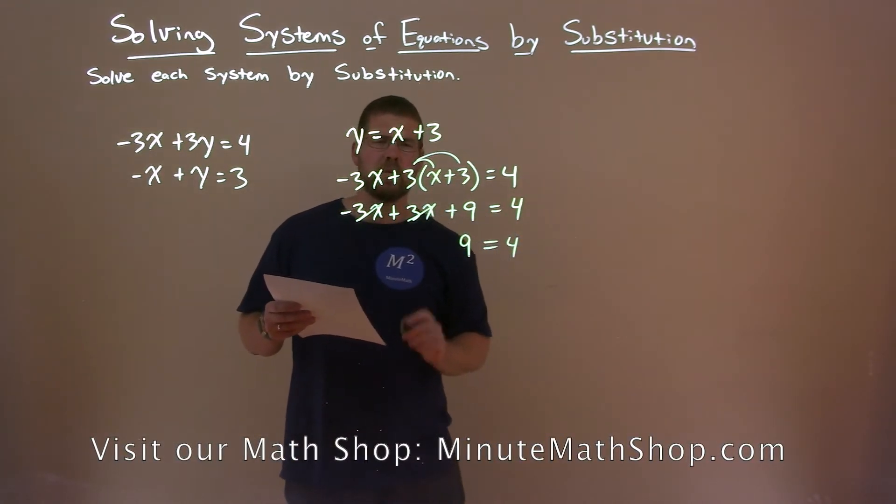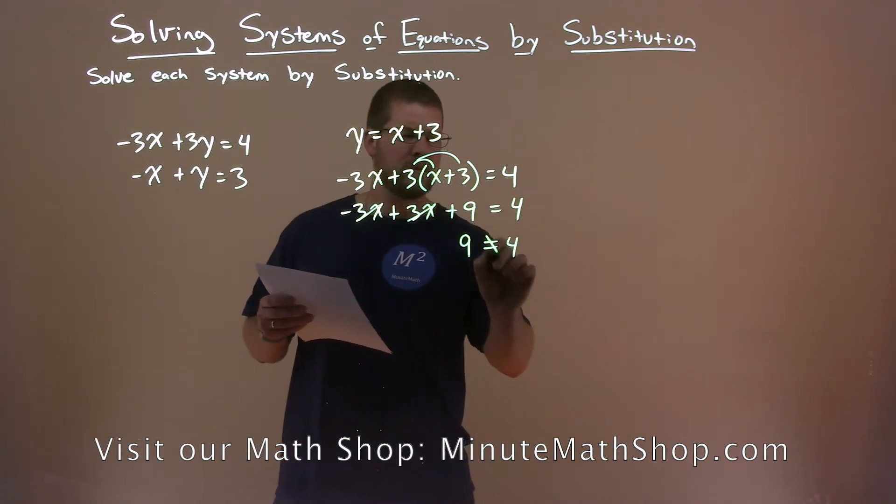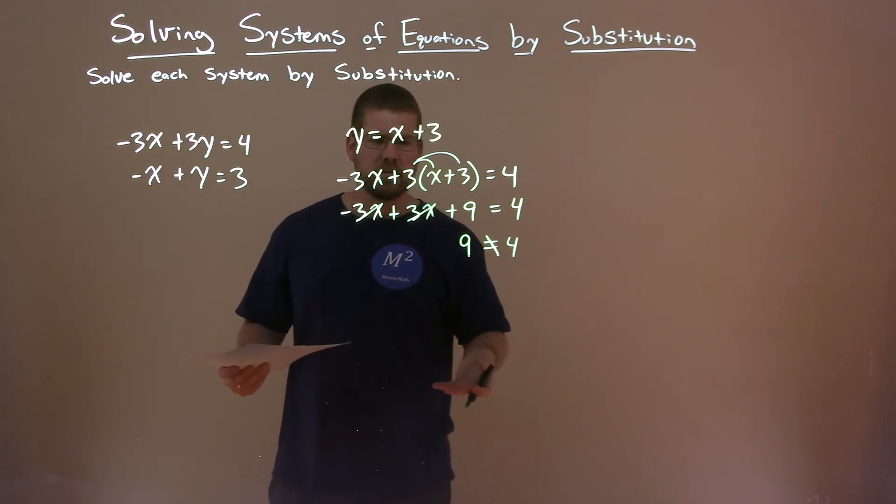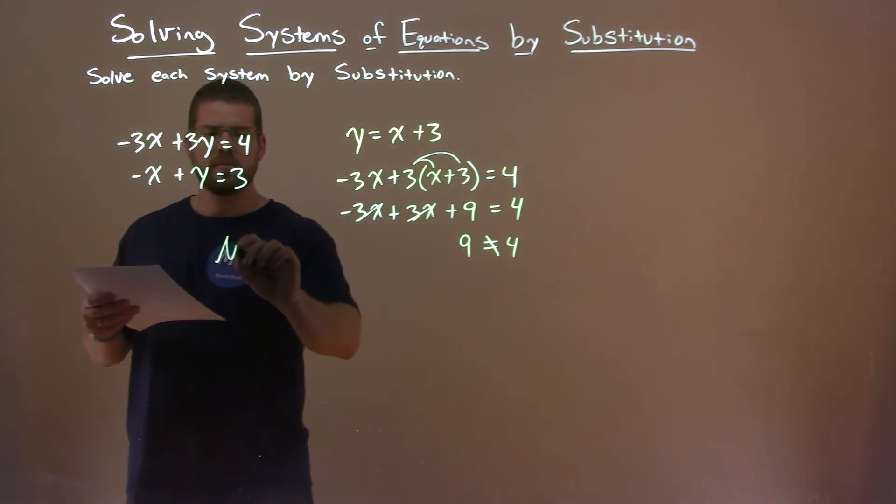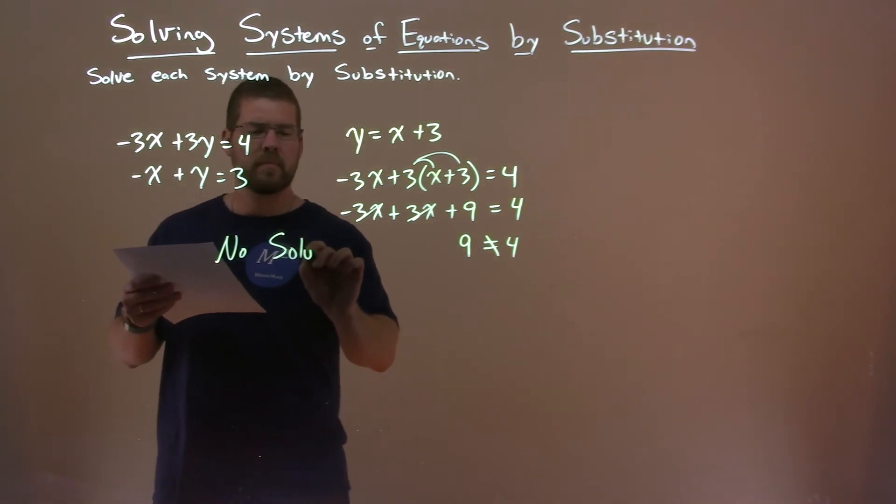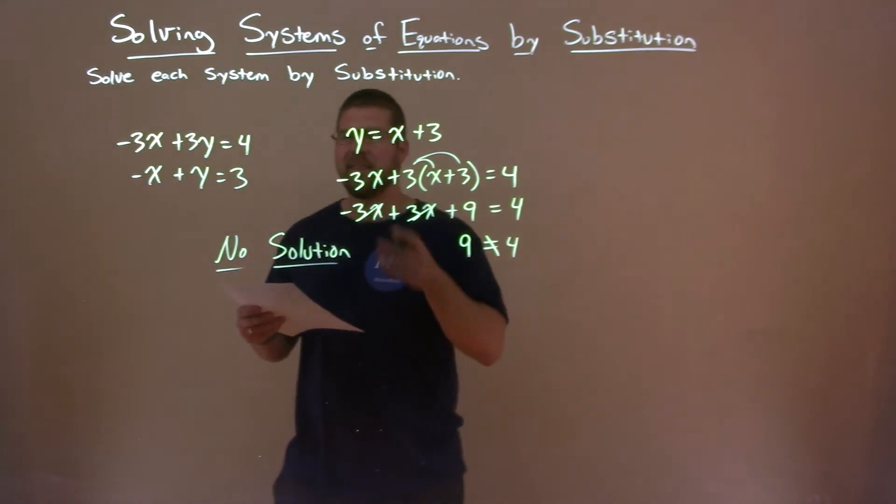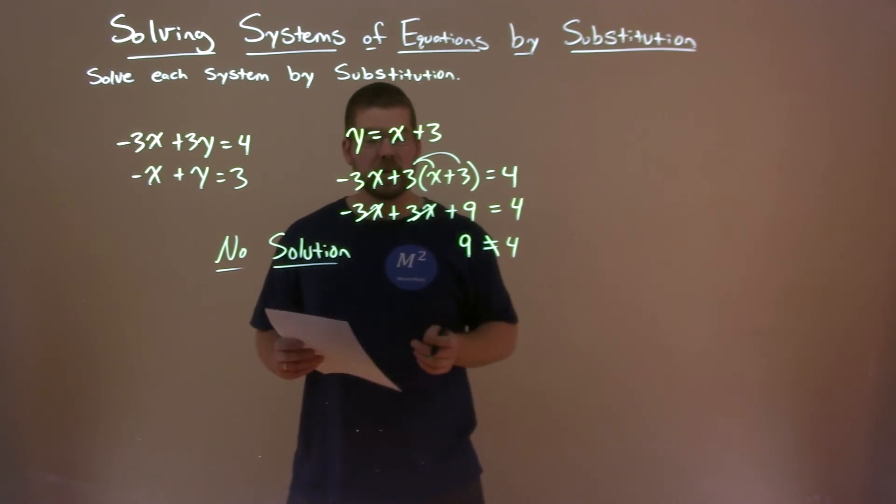Hmm. Well, is that a true statement? Does 9 equal 4? No. They're not equal. It's not true. So what does that mean here? That means we have no solution. There is no solution for this system of equations. And that is our final answer.